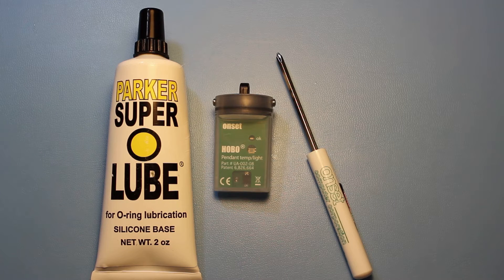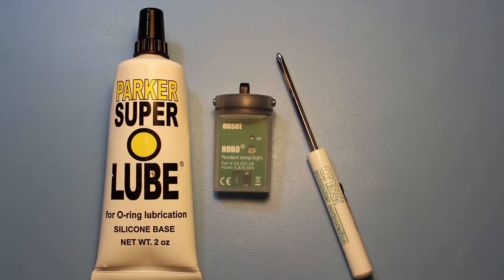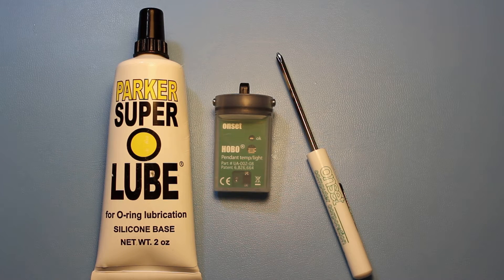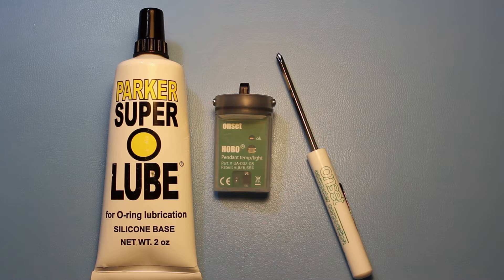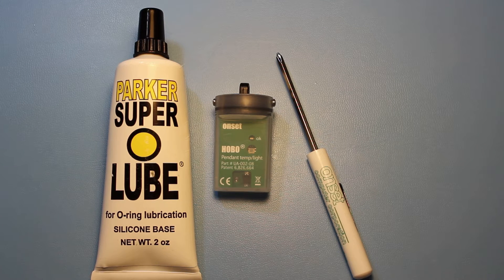We also recommend that you read and become familiar with the instruction sheet that was generated by Onset that guides you through this reworking and lubricating procedure. It's called instructions for reworking and lubricating the O-ring in a Hobo Pendant Logger.